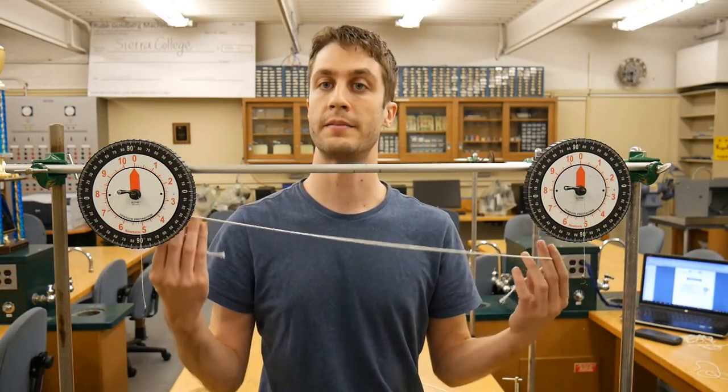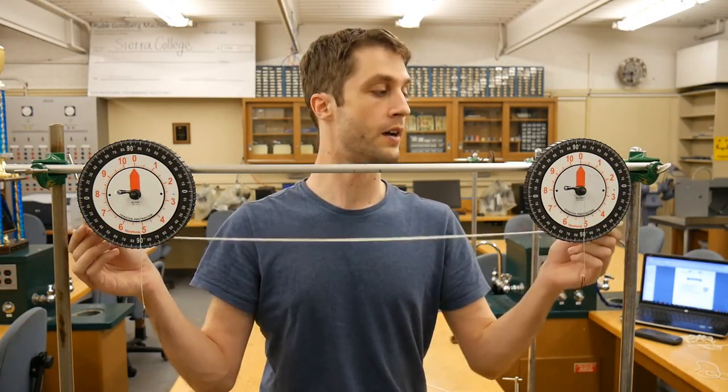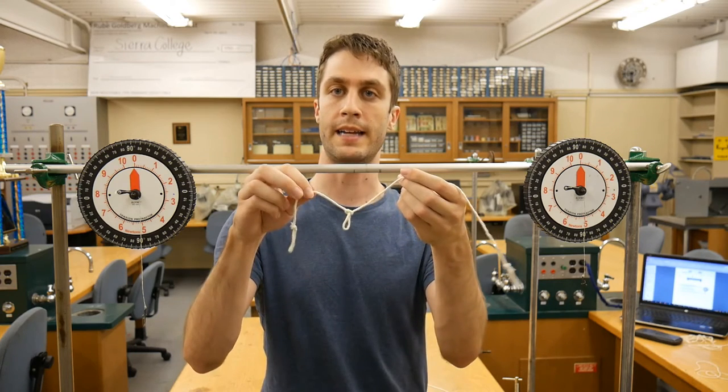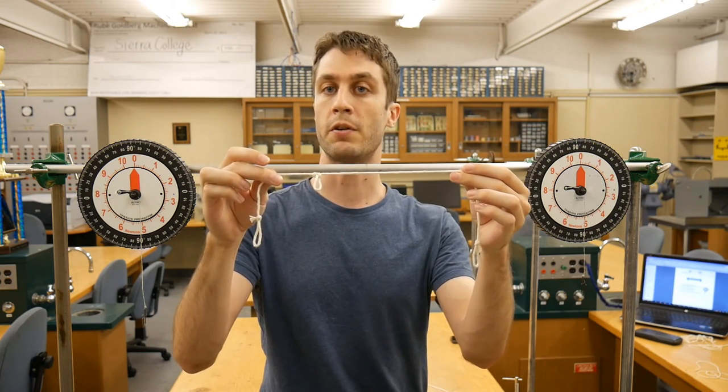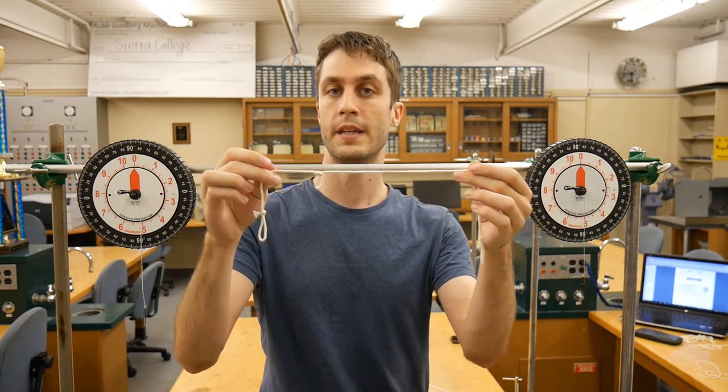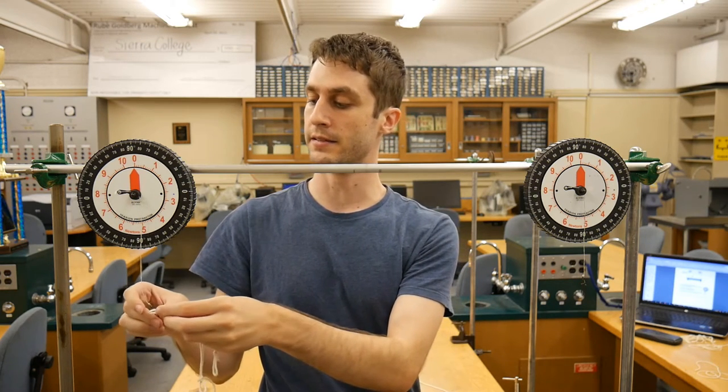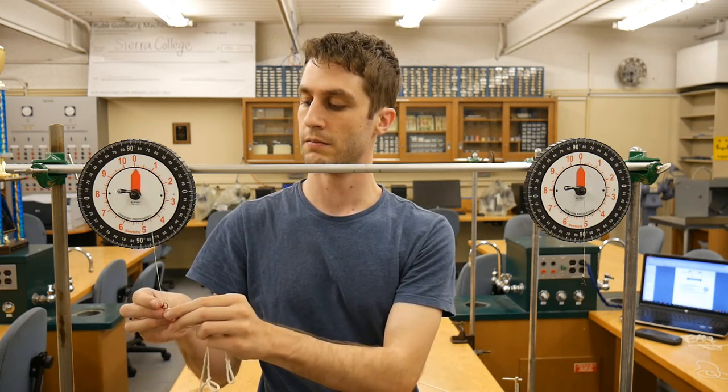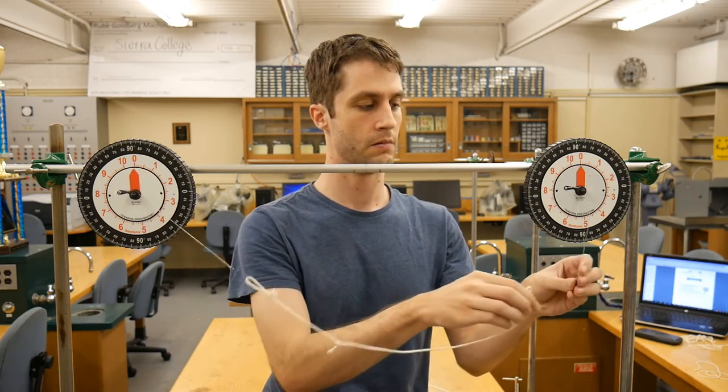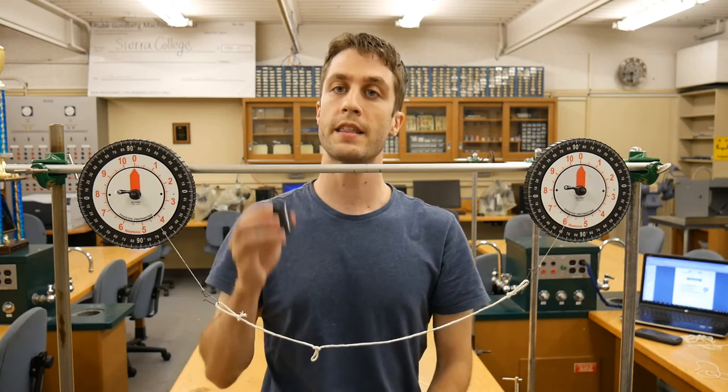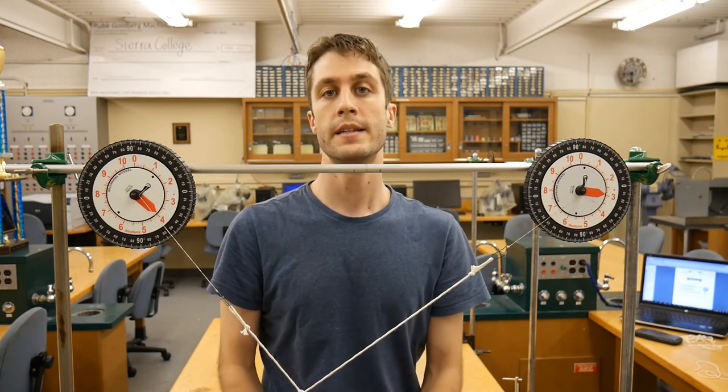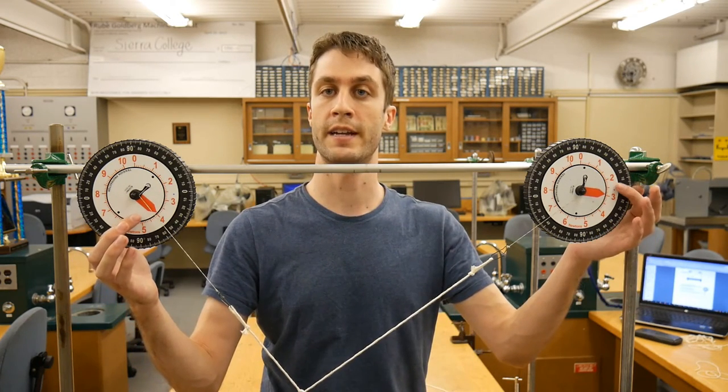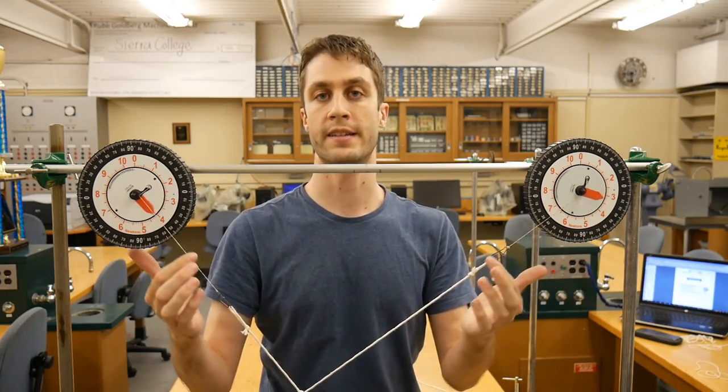Now cut a piece of string to approximately this length, enough to go from one support all the way to the other. Tie the two ends into loops, and put a third loop in the middle, like so. Try to make sure that the third loop isn't in the exact middle of the string, or else your data won't be very interesting. Take the two ends and attach them to the scales. And then take the 500 gram mass and attach it to the middle loop. To complete this portion of the experiment, take a force reading, as well as an angle reading, from each scale.